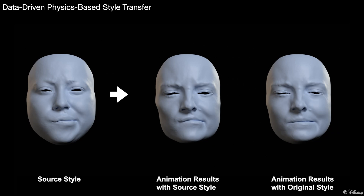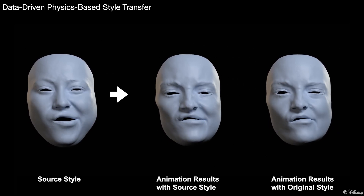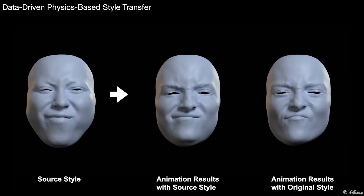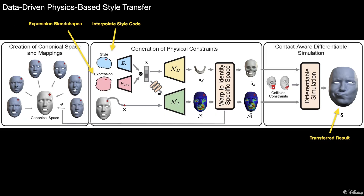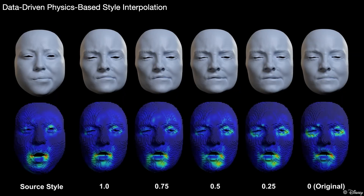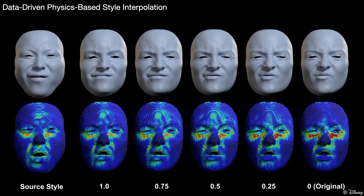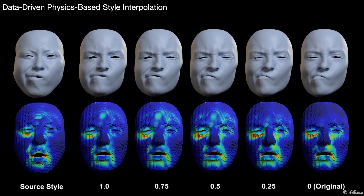Here is another result of style transfer. Thanks to our canonical space, the network learns meaningful muscle structures that are transferable across identities. Due to our Lipschitz regularization, we can also linearly blend two style codes and use the interpolated style code to animate the character. The middle section displays results at varying interpolation ratios, with actuation patterns smoothly interpolated.